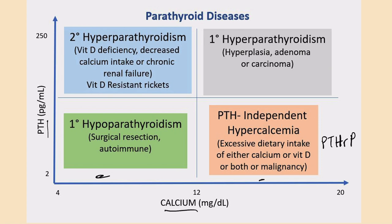Secondary hyperparathyroidism is here — we have a low calcium but a high PTH, and we expect that. We expect a high PTH with low calcium. So this is secondary hyperparathyroidism — the parathyroid glands are working overtime, but appropriately because we have a low calcium. This can be due to a number of causes, but usually it's due to insufficiency of either calcium or vitamin D.